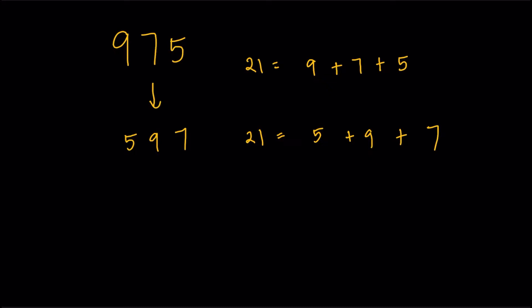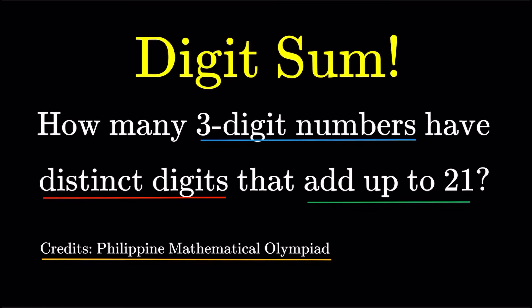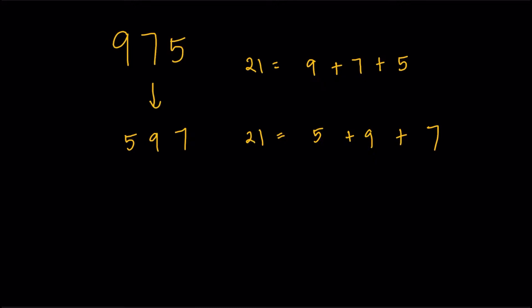Now, going back to the question though, the digit sum is 21. And it's actually pretty big because, let's just try to consider the largest possible three-digit number with distinct digits. It's going to be 9, 8, and 7, or any permutation of that. And 9 plus 8 plus 7, that's already 24.